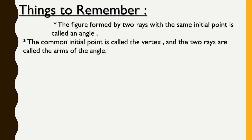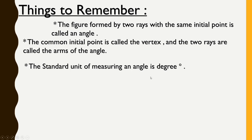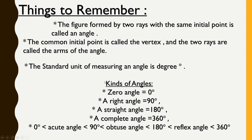Key points to remember: The figure formed by two rays with the same initial point is called an angle. The common initial point is called the vertex, and the two rays are called the arms. The standard unit of measuring an angle is degree. Angles are classified as: zero angle (0°), right angle (90°), straight angle (180°), complete angle (360°), acute angle (between 0° and 90°), obtuse angle (between 90° and 180°), and reflex angle (between 180° and 360°). Thank you.